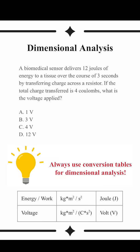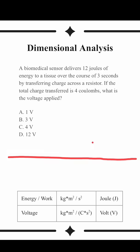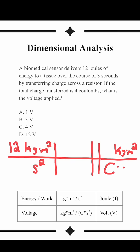Let's draw a conversion table now for our dimensional analysis. 12 joules can be written as 12 kilograms times meters squared over seconds squared. Volts can be written as kilograms times meters squared over coulombs times seconds squared.